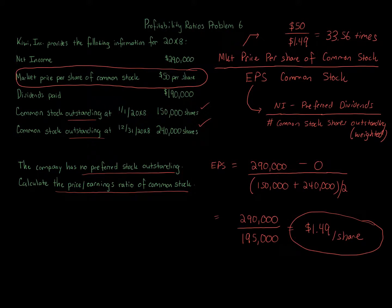So this is the price earnings ratio of common stock. Its purpose is to measure a company's future earnings prospects. Now this number, 33.56 times, doesn't necessarily mean it's bad or good. It really depends on the company and the industry. Different industries like tech, retail, or telecommunications are just so different when it comes to this price to earnings ratio. The price to earnings ratio on common stock measures a company's future earnings prospects.